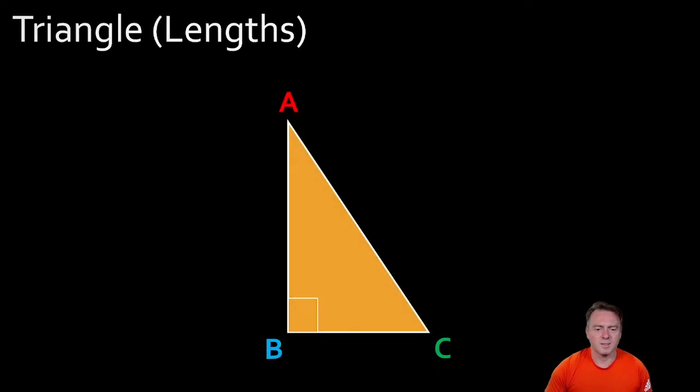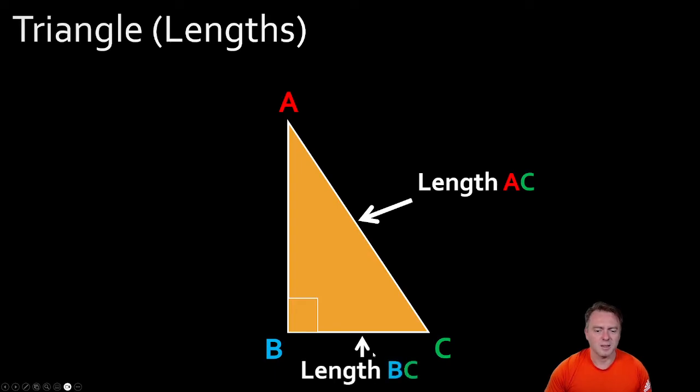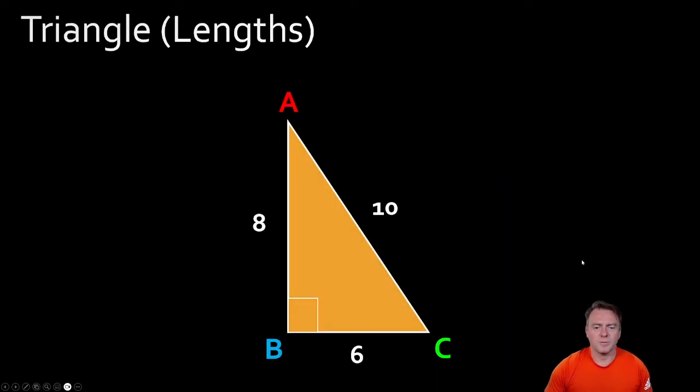So then to describe the lengths very similar we would point at that and that would be the length AC because it goes from vertice A all the way through to C. This length here another way of describing it would be length BC and then this length here would be AB. So just pause the video and see if you can label that one.